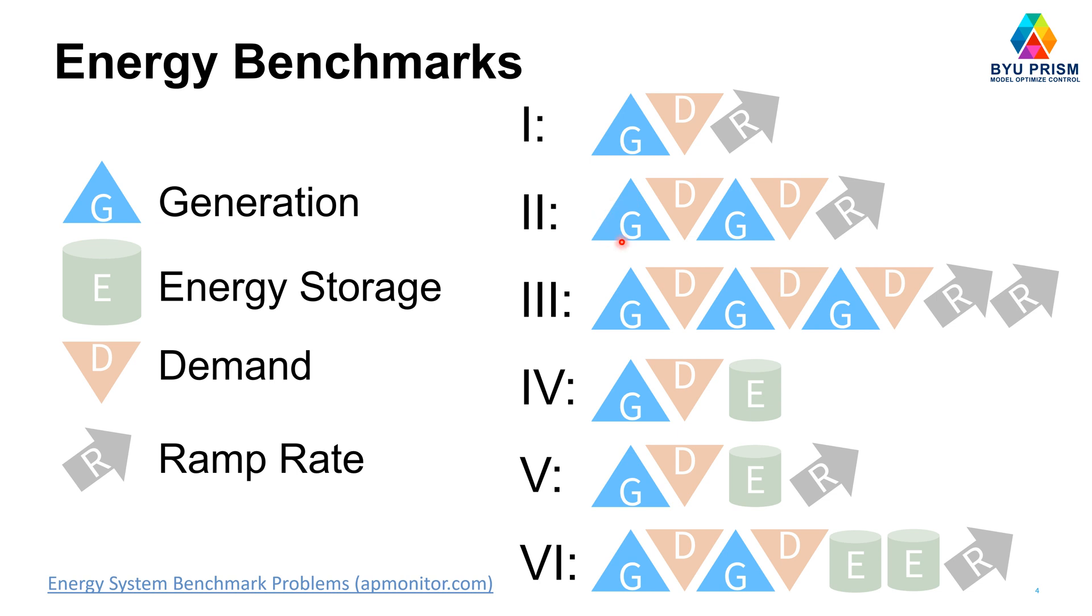For the second one, we have two generators. This would be like cogeneration, where you produce electricity and steam, and maybe two different demands for that electricity and steam. But you have a ramp rate on how fast you can ramp up or down the boiler that produces electricity through the turbine or the waste heat that you'd use. We also have a third one with three generations and three demands with two producers that you can ramp up or down.